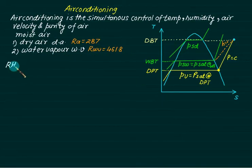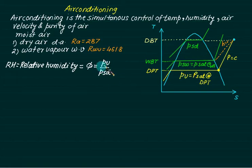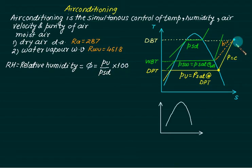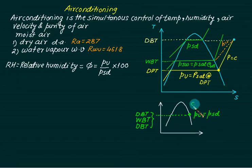Relative humidity (RH), represented by the symbol phi (φ), is defined as the partial pressure of water vapor divided by the saturation pressure at dry bulb temperature — that is, Pv / P_sd. Since Pv is always less than P_sd, this value is always a fraction and is multiplied by 100 to express it as a percentage. At a point on the saturation curve, dry bulb, wet bulb, and dew point temperatures are all equal, and all pressure lines meet at the same point.